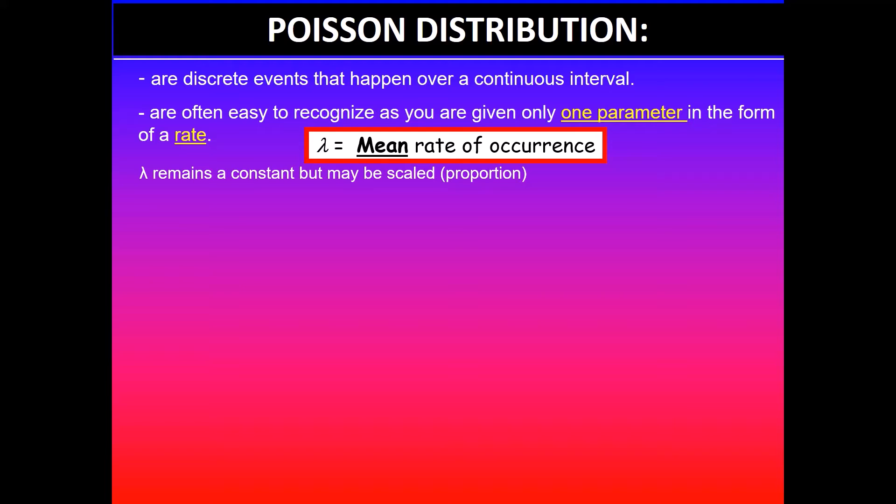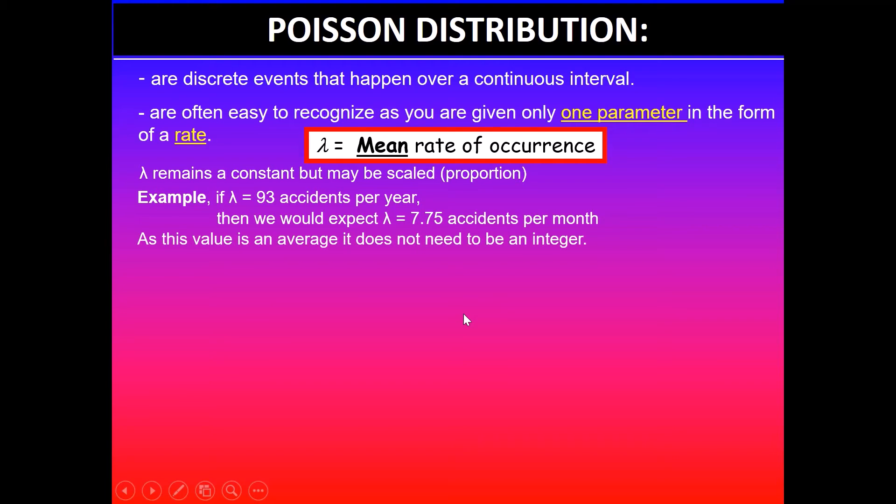Please note that lambda, which is the mean rate of occurrence, will remain constant but it may be scaled in proportion to the size of the interval that you're given. For example, if mean number of accidents per year is 93, then we can expect 7.75 accidents per month. This value represents an average and it does not need to be an integer.